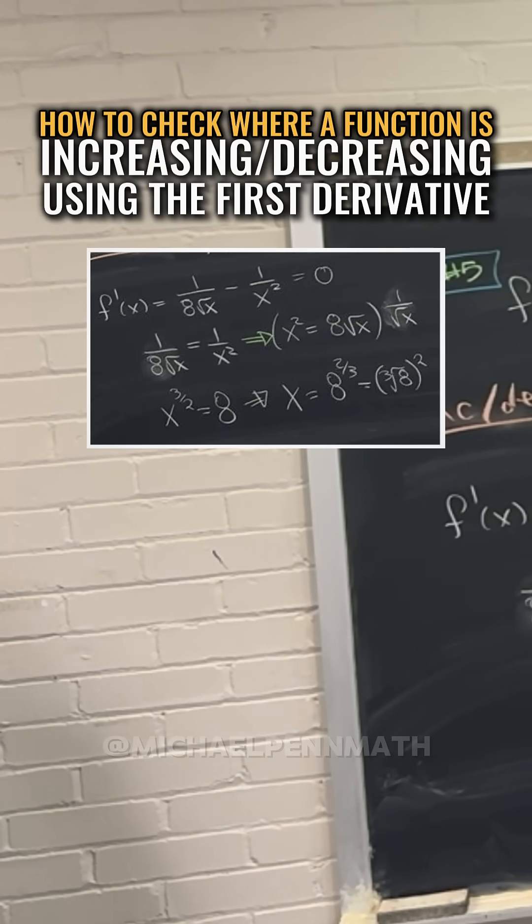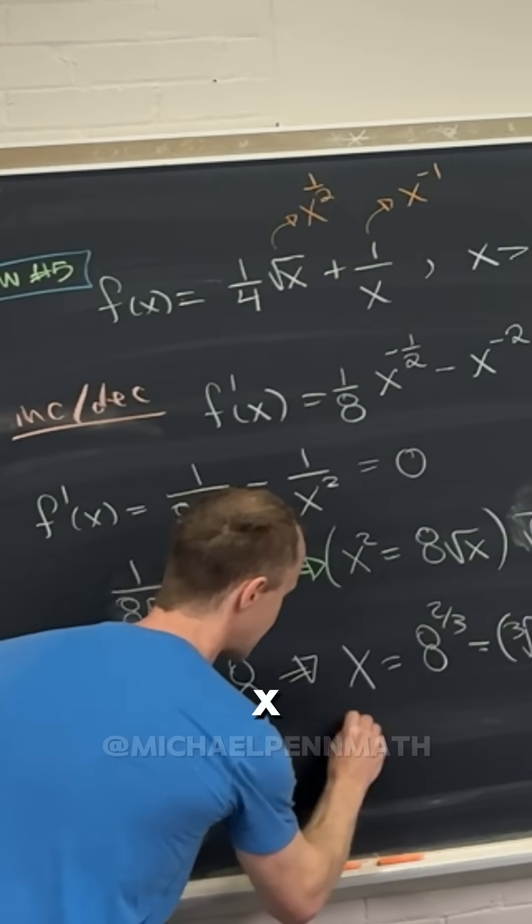Cube root of 8 is 2, squared is 4. So here we get x equals 4.